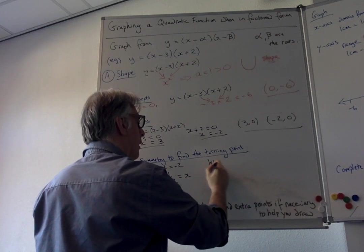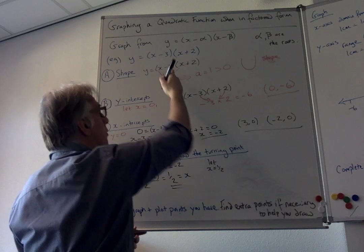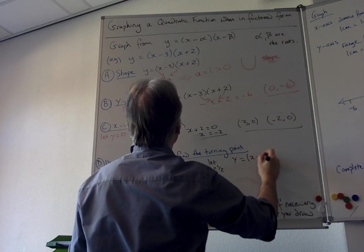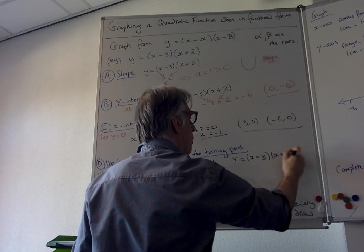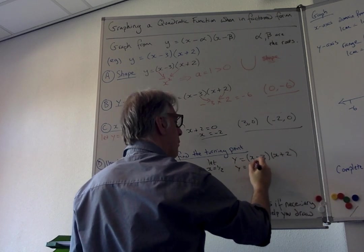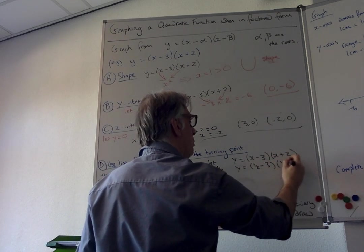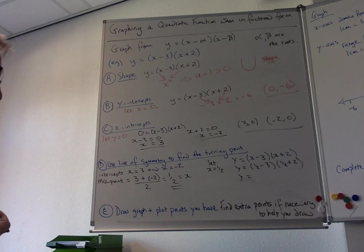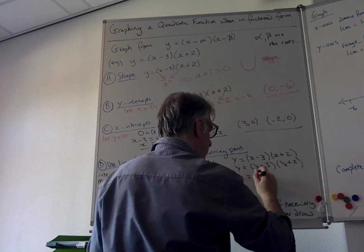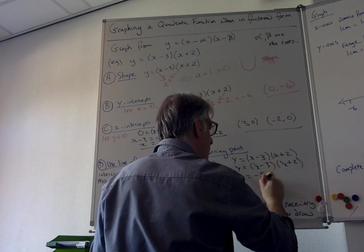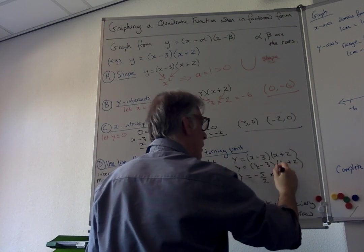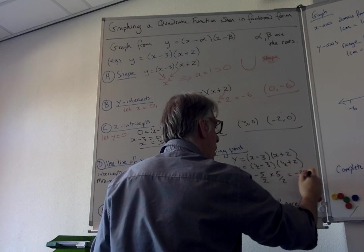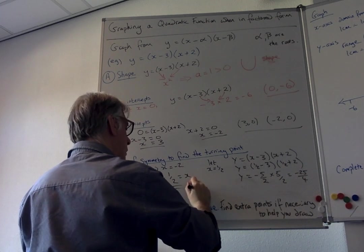If you know what x is, you can work out y. Let x equal a half. Using the equation, it's x minus 3 times x plus 2. Put the numbers in: a half minus 3 is minus 5 over 2, times a half plus 2 which is 5 over 2, gives minus 25 over 4. So the minimum...